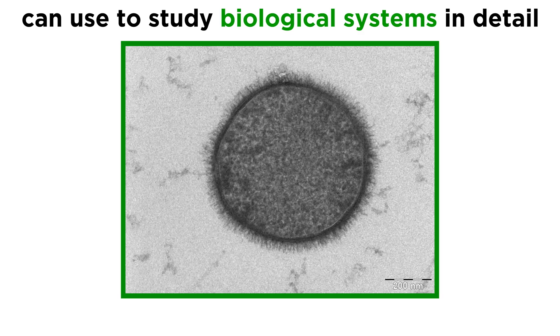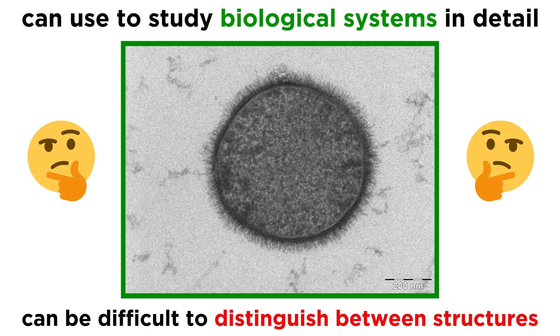which allowed us to visualize things much smaller than what had previously been seen with light microscopes. As we said, with electron microscopes, scientists could study biological systems in more detail, but it was still difficult to identify or distinguish between different structures with accuracy.